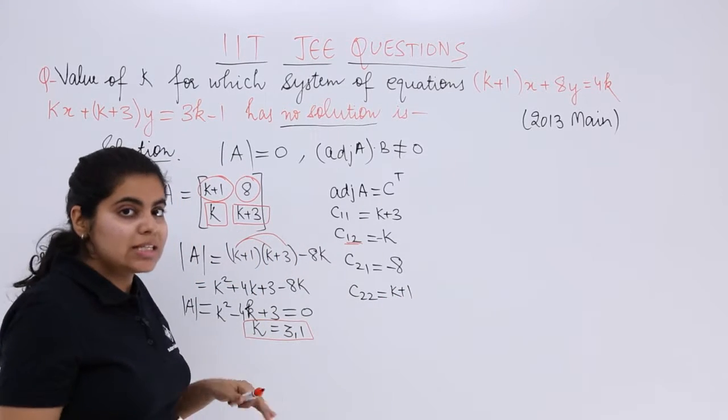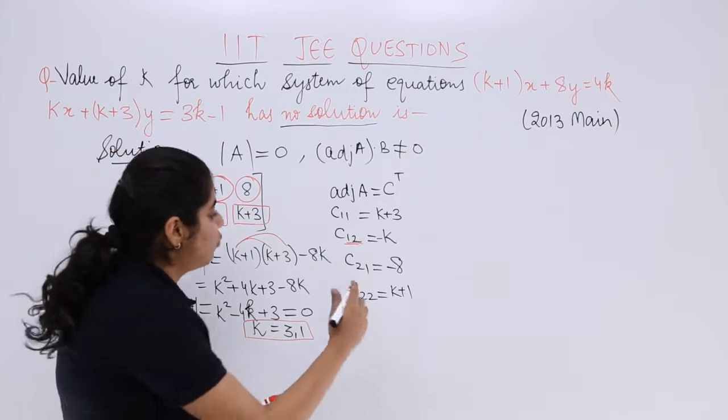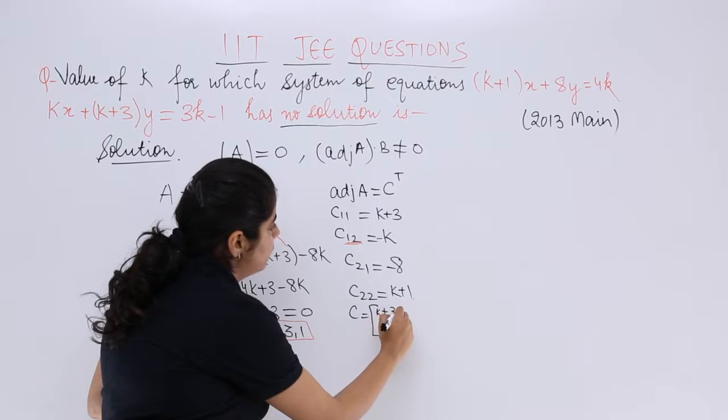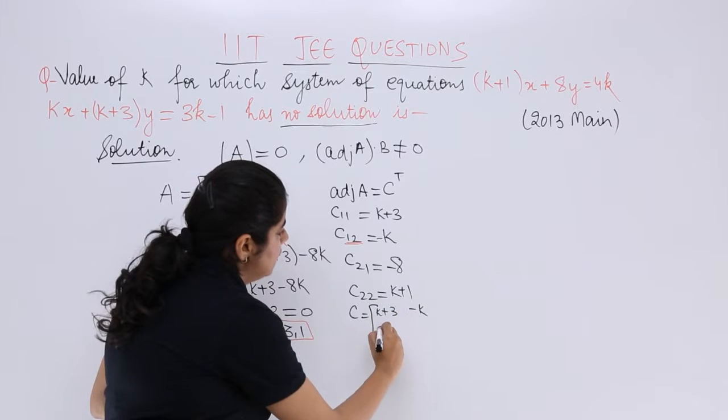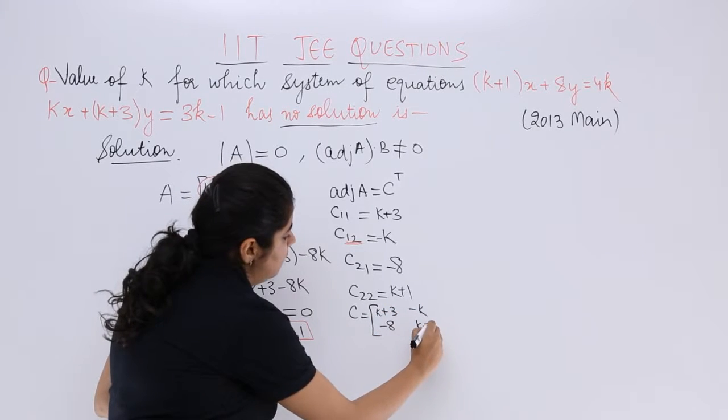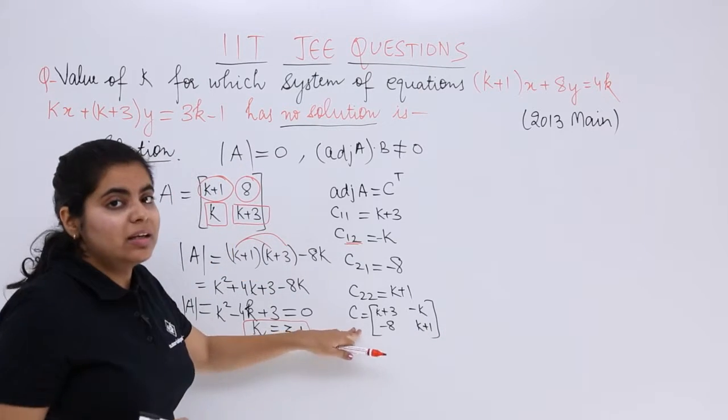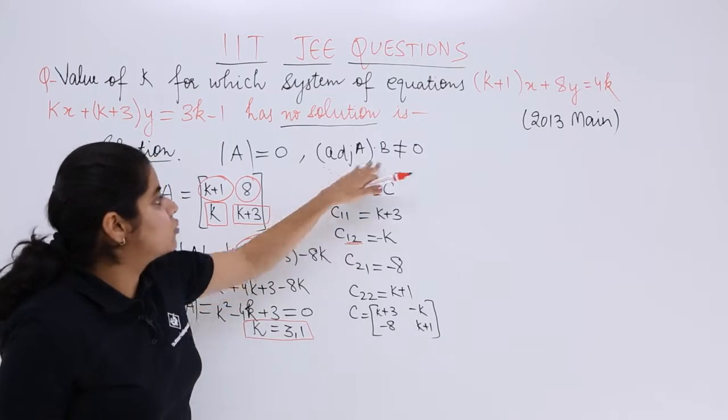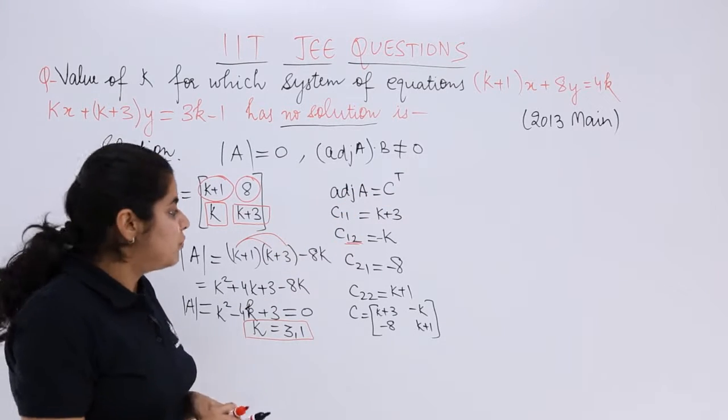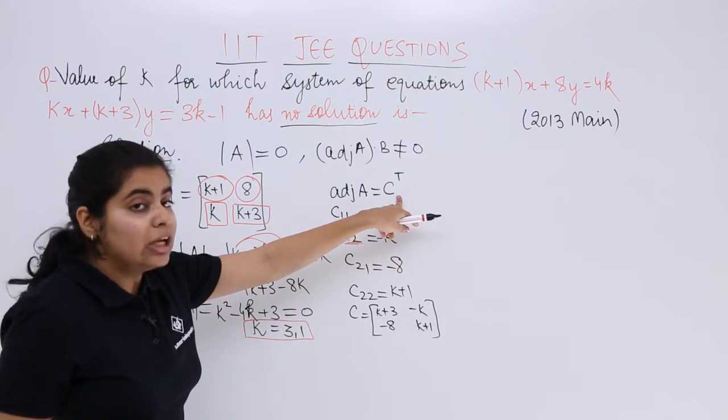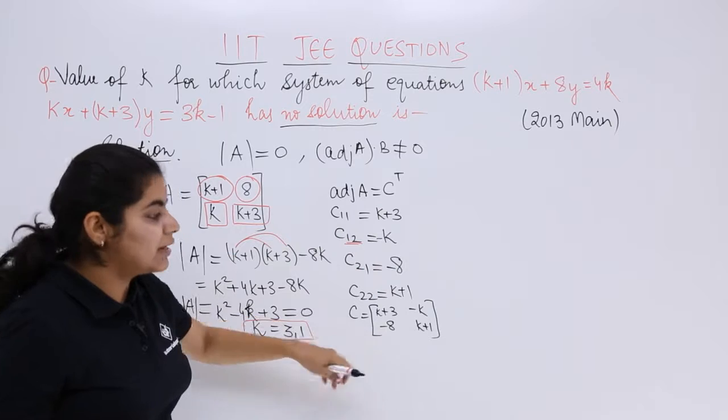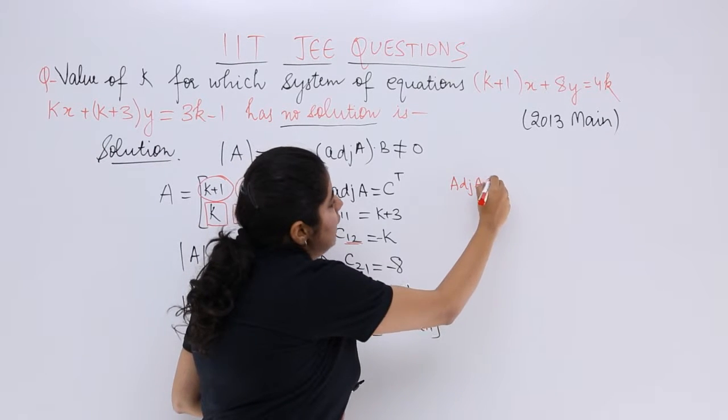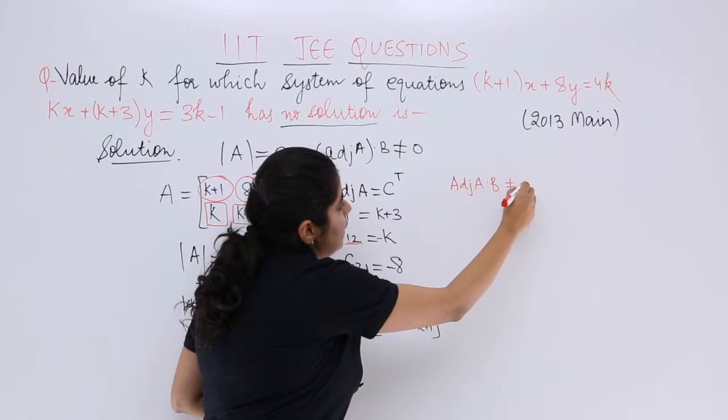The cofactor matrix is: c₁₁ = k+3, minus k, minus 8, k+1. But cofactor matrix is not our final goal. We need cofactor transpose to get adjoint. So I write adjoint A into B should not equal 0.